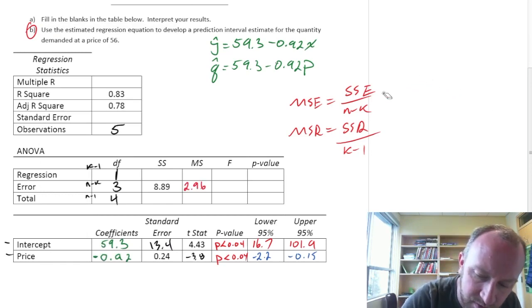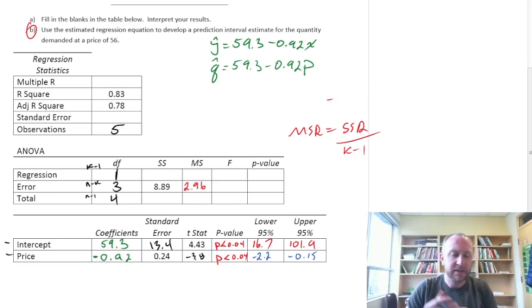Now what can we do next? So we can't do much more in that ANOVA because we're missing some information to calculate sum of squares regression and mean squared regression.